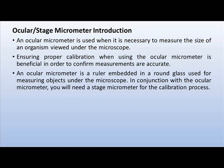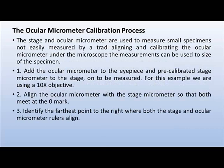The ocular micrometer is used for calibration of the microscope. It is used when it is necessary to measure the size of an organism viewed under the microscope. For the interpretation of specimens, it is important to calibrate the microscope. Proper calibration confirms measurements are accurate. An ocular micrometer is a ruler embedded in a round glass used for measuring objects under the microscope. In conjunction with the ocular micrometer, you will need a stage micrometer for the calibration process. The ocular micrometer is placed at the eyepiece of the microscope and the stage micrometer slide is kept on the stage.